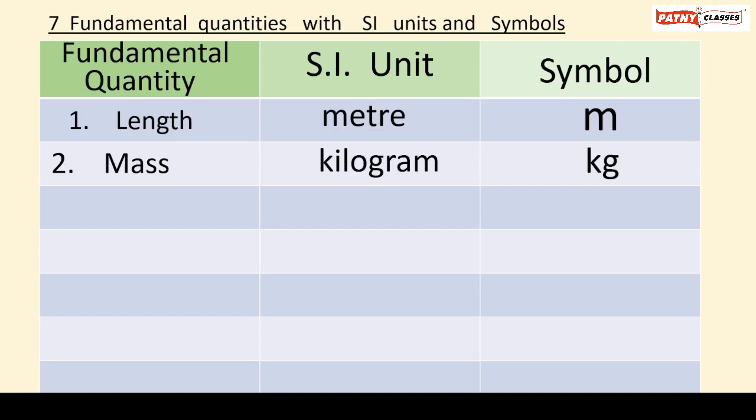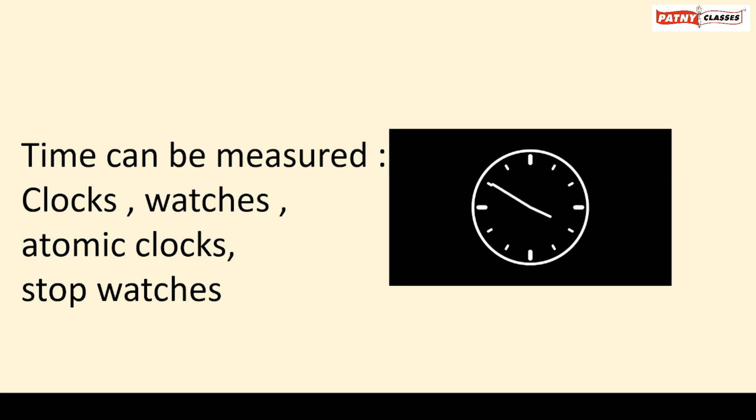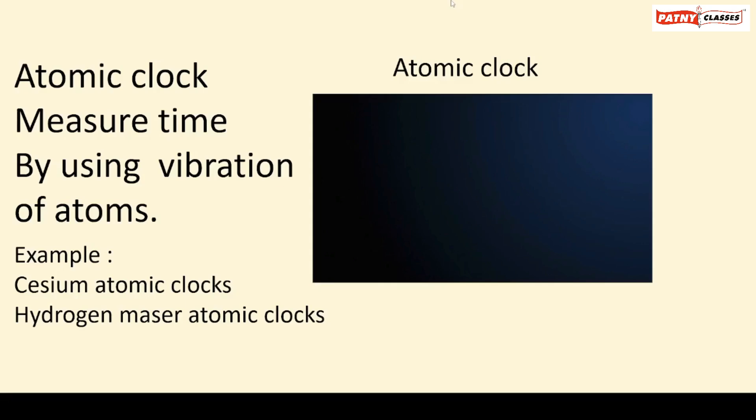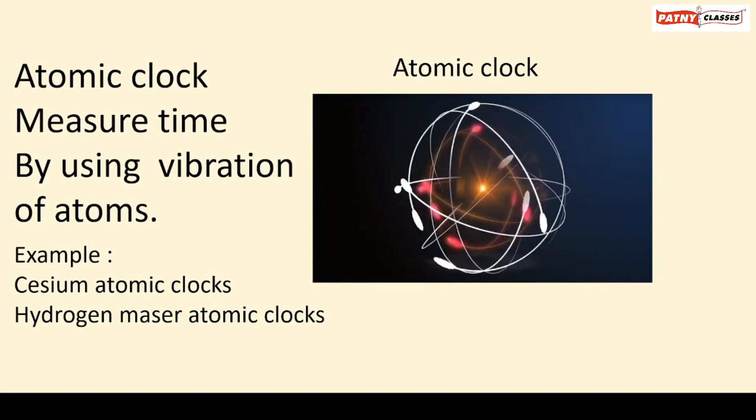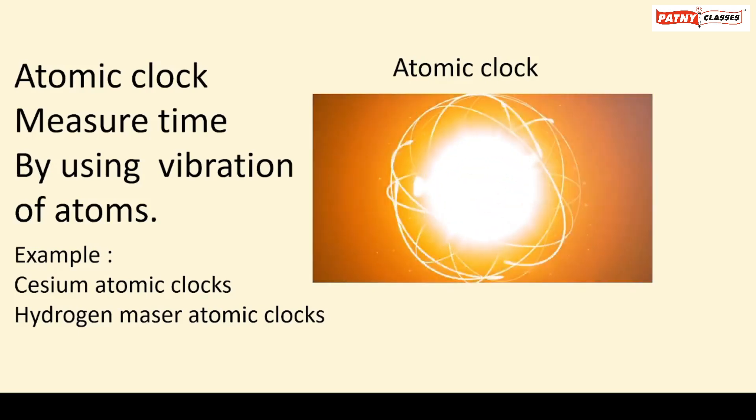The third fundamental quantity is time. The SI unit is second and symbol is s. Time can be measured by using clocks, watches, atomic clocks, and stopwatches. Atomic clocks measure time by using vibrations of atoms.